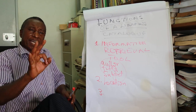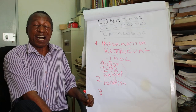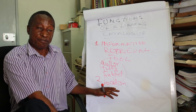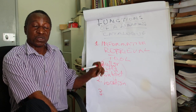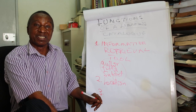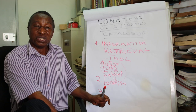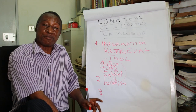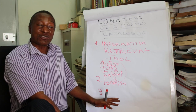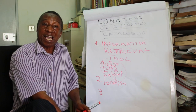So the major functions of a library catalog, particularly for a user, are: retrieval — the major function, helping the user identify what is available in the library either by author, title, or subject; location — where that library material is; and choice — making a choice on the available library materials either by edition or by a particular format.